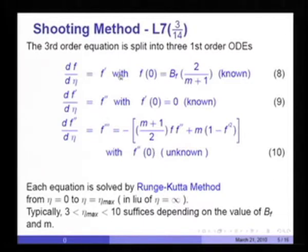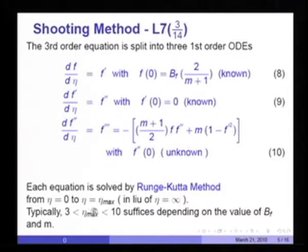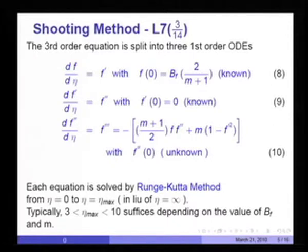Since these three equations are ordinary differential equations, we can solve them by the Runge-Kutta method from η=0 to η_max. We say η_max in lieu of infinity because there is no point solving beyond what is necessary. Values of η_max of order 3 to 10 will suffice depending on the values of b_f and m. η_max is a fictitious quantity representing the infinity condition in a numerical calculation.